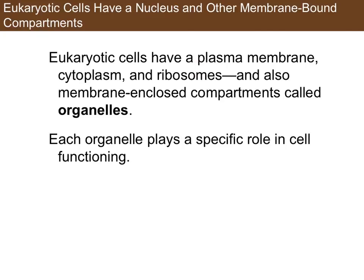Eukaryotic cells have the same plasma membrane, cytoplasm, and ribosomes. But what sets them apart are membrane-enclosed compartments called organelles. Each one of these plays a specific role in cell functioning. An evolutionary advantage of having organelles is that it allows specialization of chemical reactions. If parts are compartmentalized, that brings substrates and enzymes into closer proximity, increasing the likelihood that they'll form a relationship and bond, and therefore carry out chemical reactions.